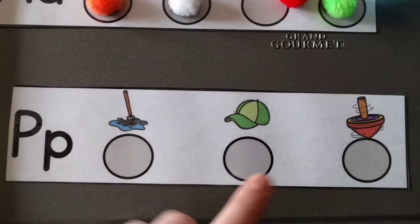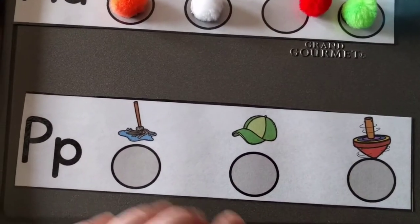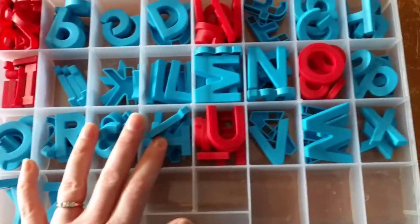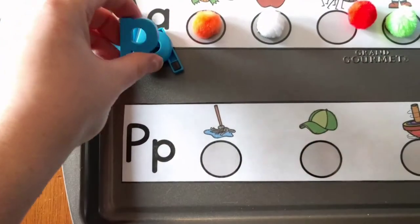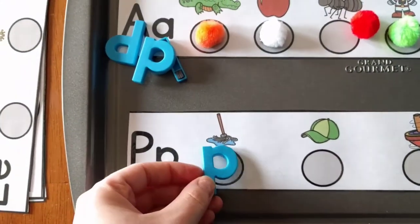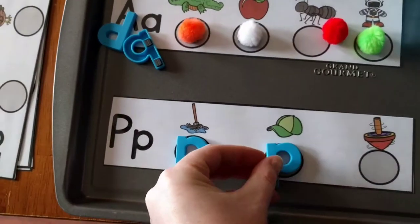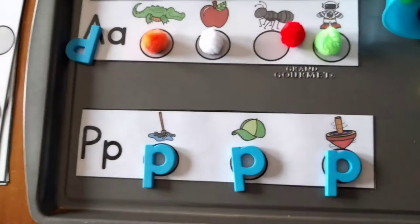So when they do the sound, they're listening for p at the end of these words. And another way you can do it is you can use just some alphabet letters. I'm going to get out the P's. And then what we're going to do is they can say p, p, mop. P, p, cap. P, p, top.